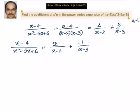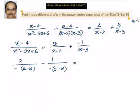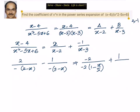Now how to convert this into a power series? We write it as 2 divided by minus of 2 minus x, minus 1 by minus of 3 minus x. Our idea is to write it in terms of 1 minus x. Taking 2 common gives 1 minus x by 2, and taking 3 common gives 1 minus x by 3. So we get minus 1 into 1 minus x by 2 to the power minus 1, plus 1 by 3 into 1 minus x by 3 to the power minus 1.